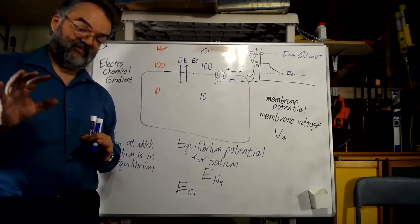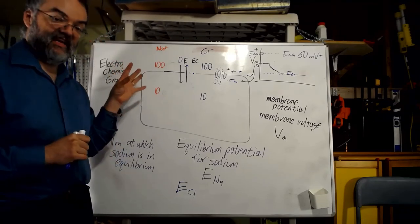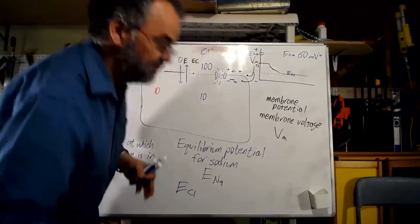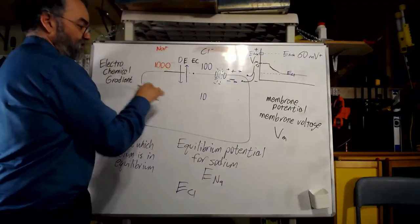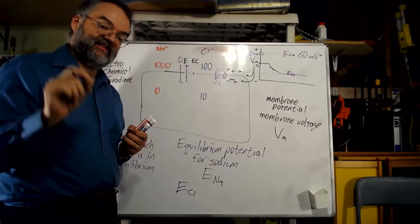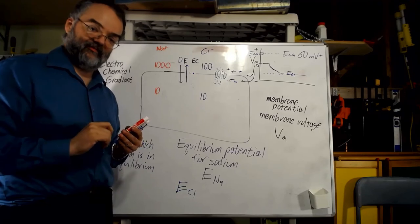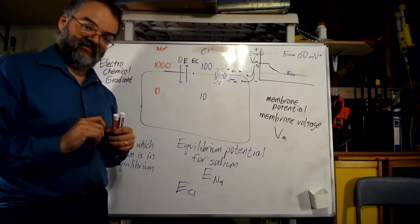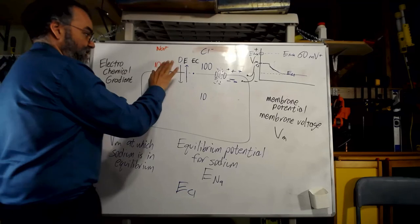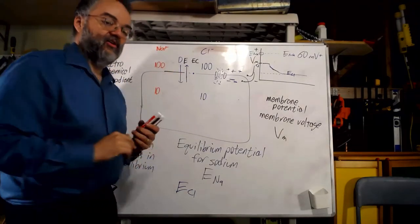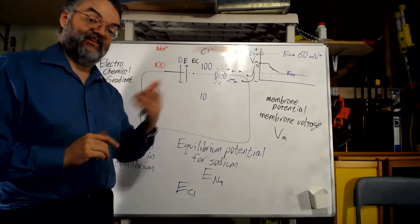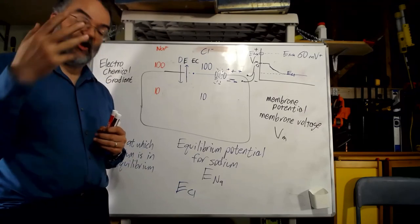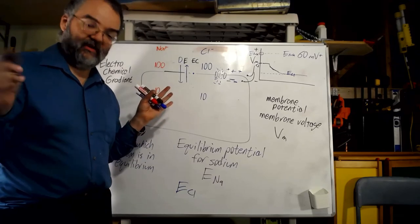I want you to think about one more thing. We've looked at ENa and ECl. If I change the concentration numbers — say make the outside 1,010 instead of 100 — will that affect ENa, the voltage needed to put sodium in equilibrium? Will it affect ECl? That's one set of things to think about. The next is: what will happen to the membrane potential if I open a sodium channel and a chloride channel at the same time? Try to come up with some answers, talk to me about it, email or zoom me, and we'll go over it in the next class.